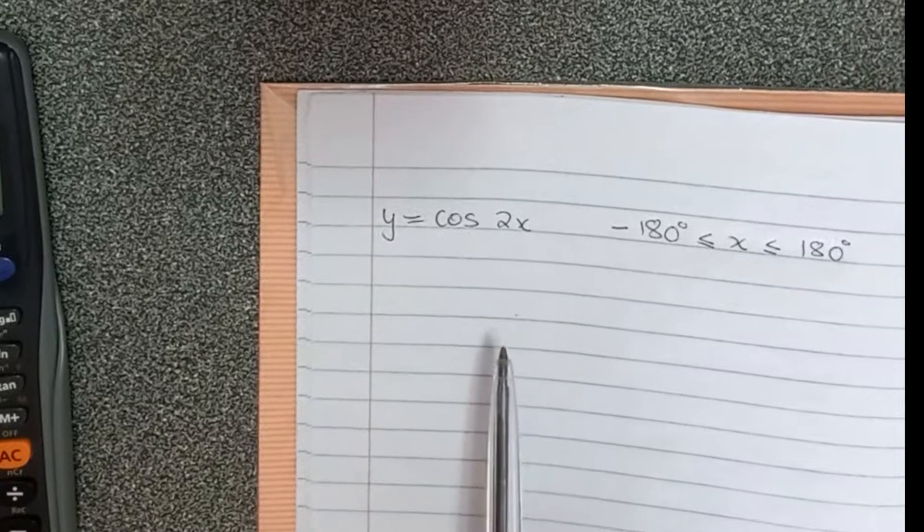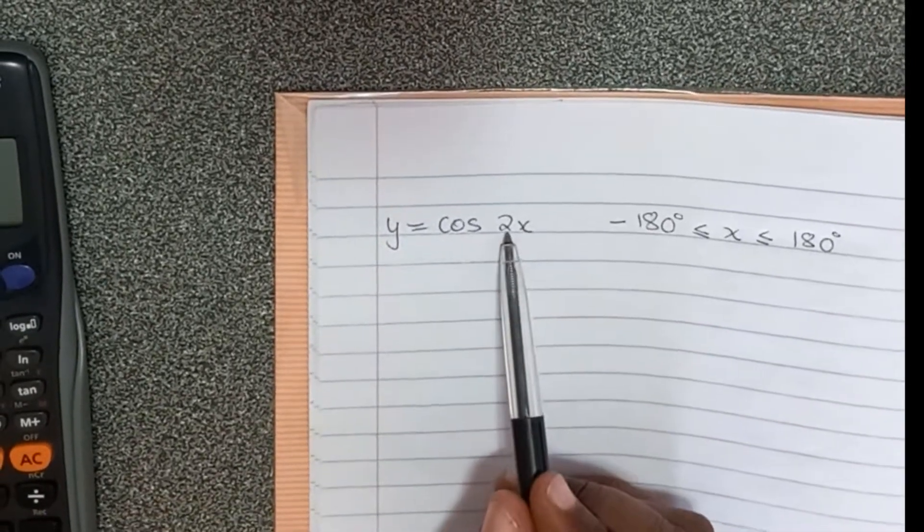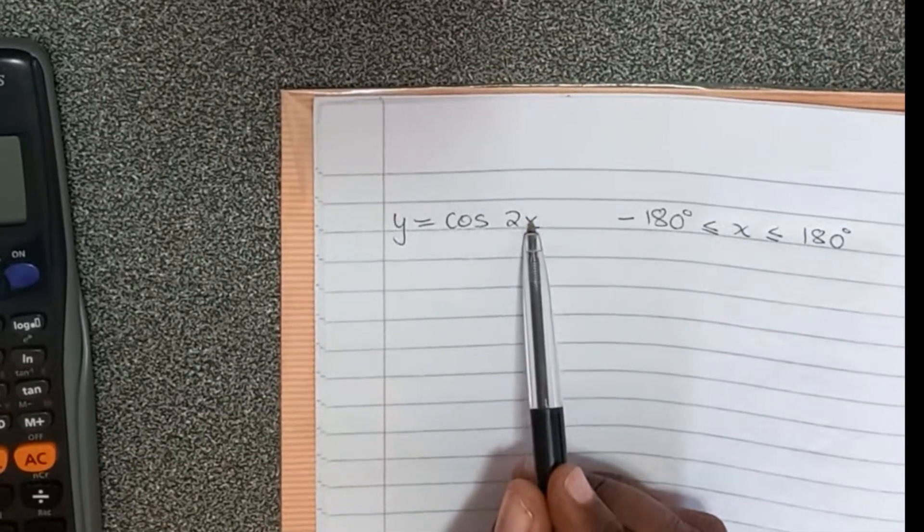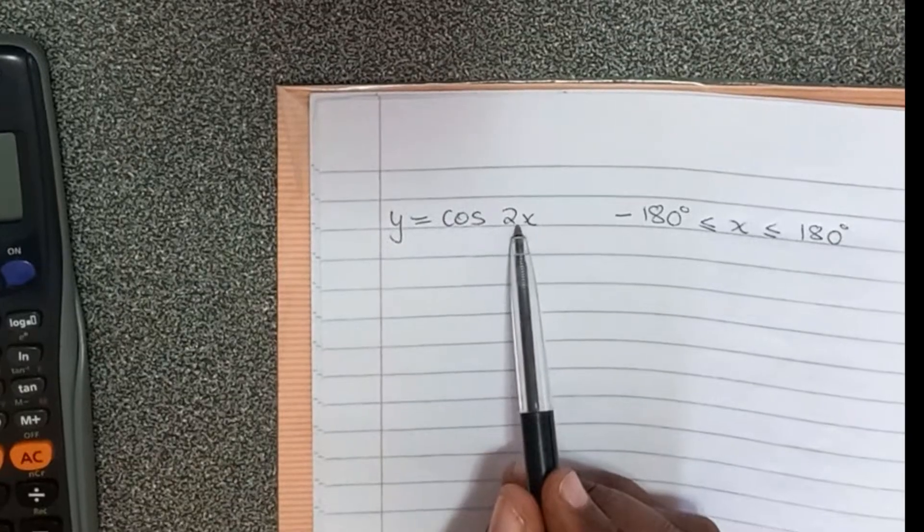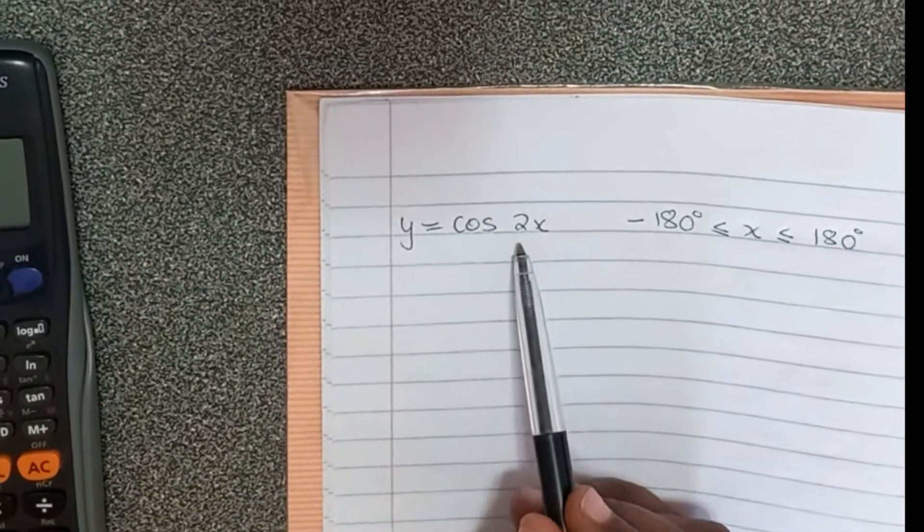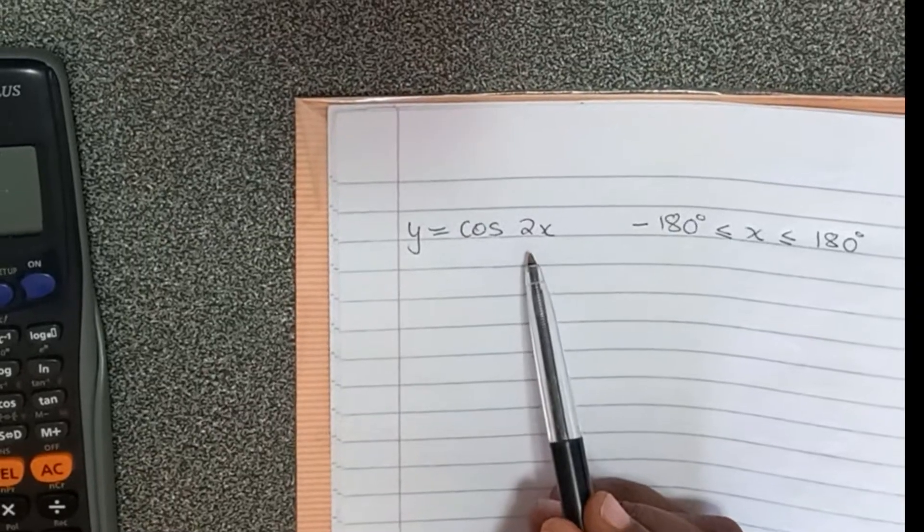They've changed the period. Remember, the sine graph and the cos graph, the period is 360, but when you write a number next to the x like that, you're changing the period. You're actually dividing the period by two. So when we do it in the calculator, we need to remember that when you do the step, the interval where there's a change, you need to change the interval.